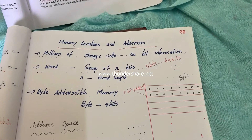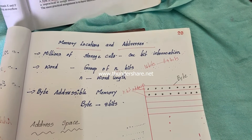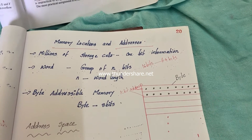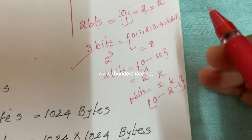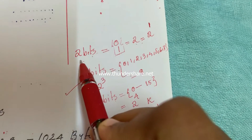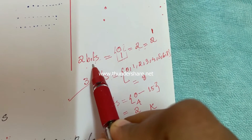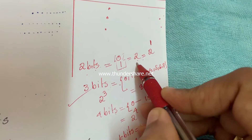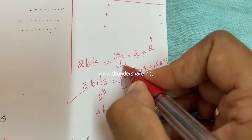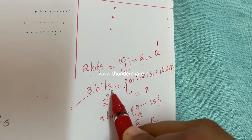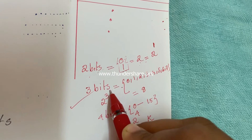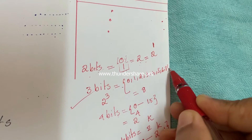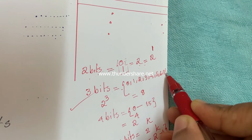How can we represent this address? We need k bits of information to represent the address. Consider this: suppose we have 1 bit — how many values are possible? We can represent 2 values: 0 and 1. Using 3 bits, how many values are possible? We can represent 0, 1, 2, 3, 4, 5, 6, 7 — a total of 8 values ranging from 0 to 7, possible using 3 bits of information.